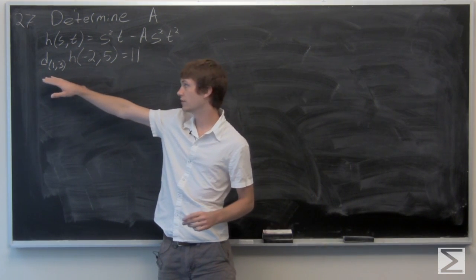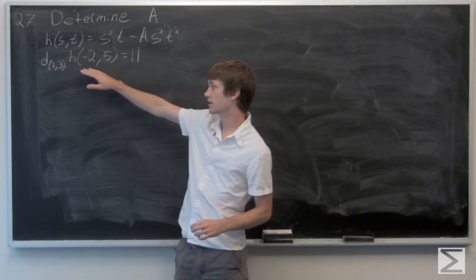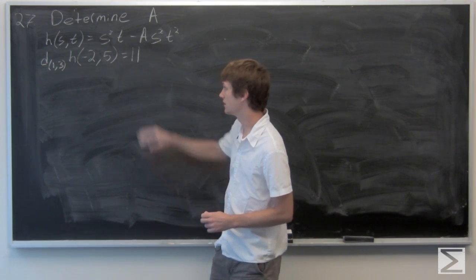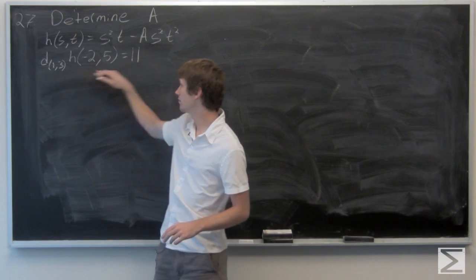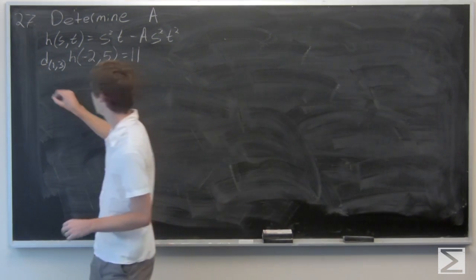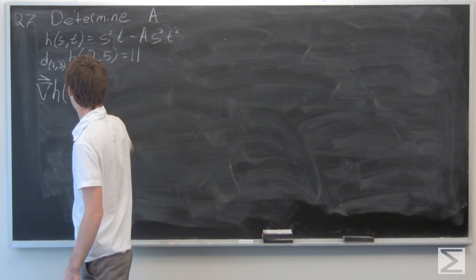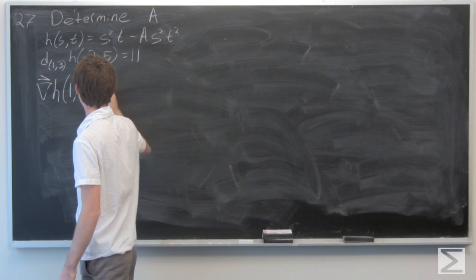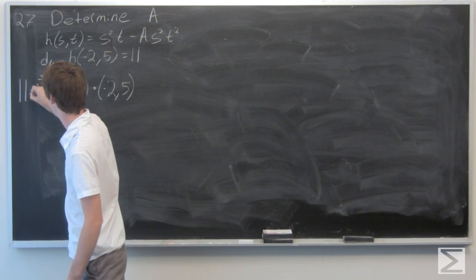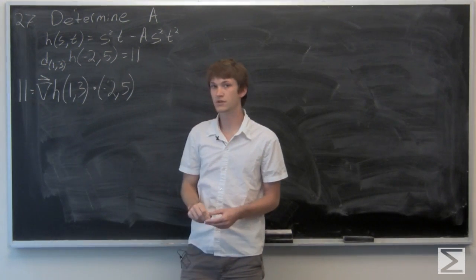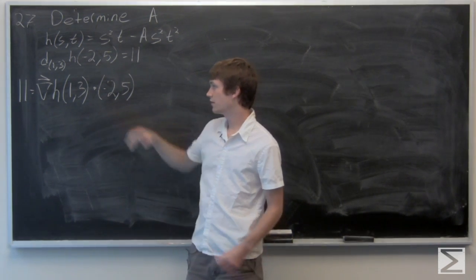We know that the total derivative of h at the point with respect to the vector is equal to 11. So first we're going to utilize this equation to see that 11 equals the gradient vector of h at the point dotted with the vector.